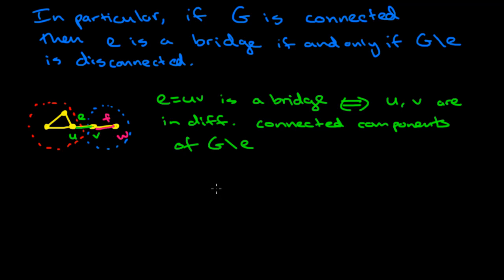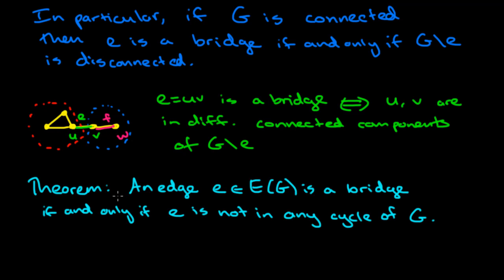You've probably observed from the examples that bridge edges cannot lie on a cycle. And in fact, that is our first theorem: an edge is a bridge if and only if it is not on any cycle in the graph.